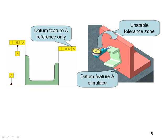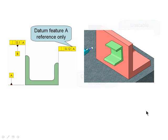Often when there's only one datum reference on perpendicularity or parallelism, you can end up with an unstable tolerance zone. In this case, I have just datum feature A referenced, which means to inspect the part I would put it against a datum feature simulator, and the part could rock around.